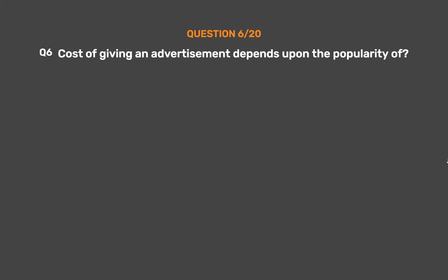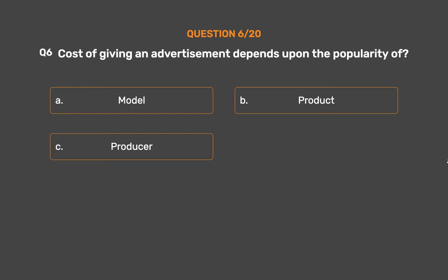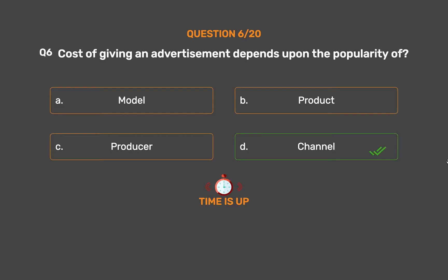Question number 6. Cost of giving an advertisement depends upon the popularity of what? Option A: Model. Option B: Product. Option D: Channel. The correct answer is Option D: Channel.